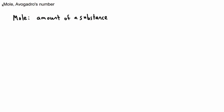We have something called a mole, and we're going to look at this and how it relates to Avogadro's number. Now what exactly is a mole? It's not the animal. We're talking about a mole as in chemistry and physics — it really means the amount of a substance, and that doesn't really help us very much. Let's maybe make it more useful.